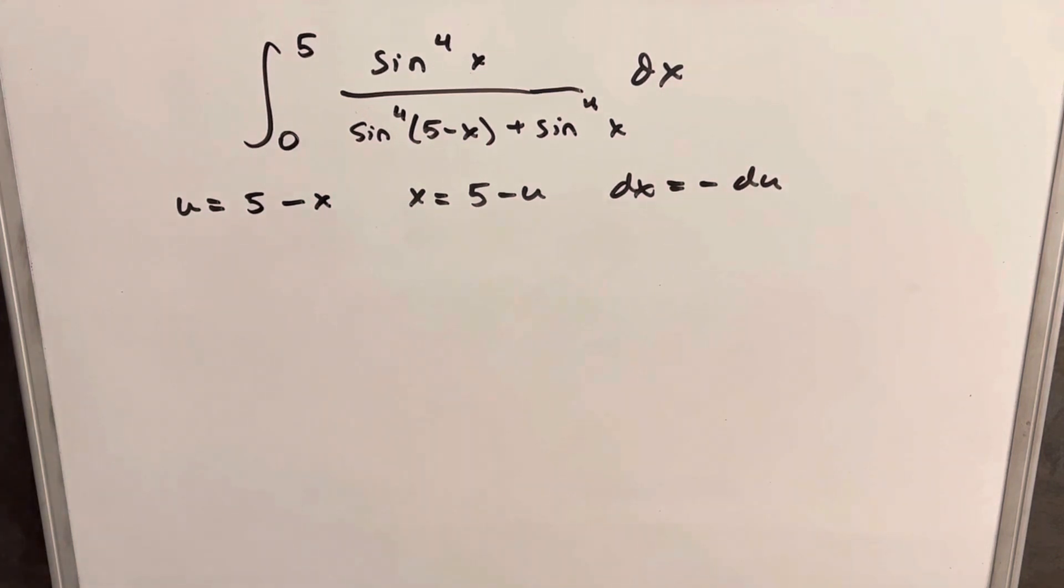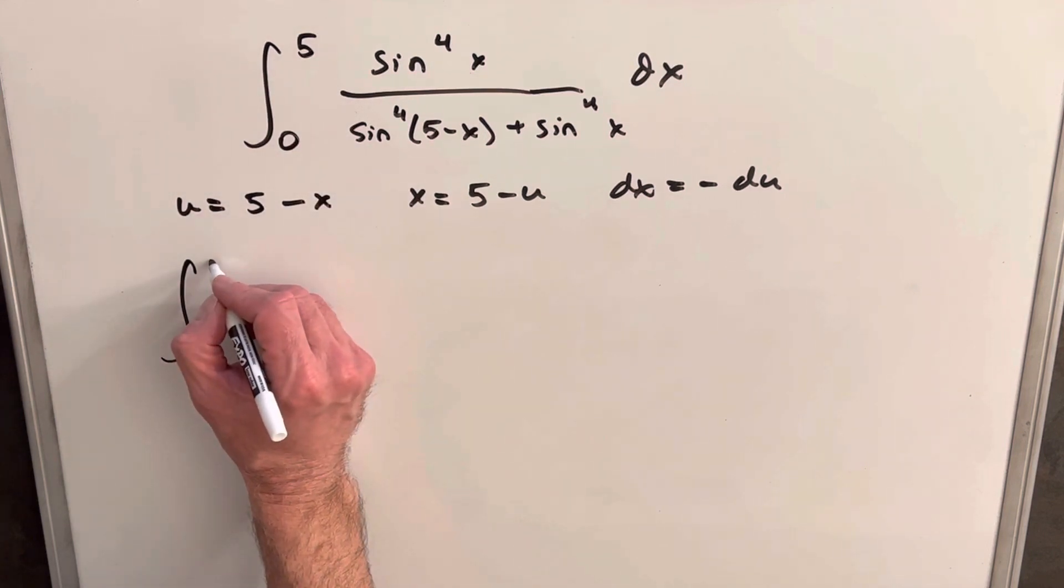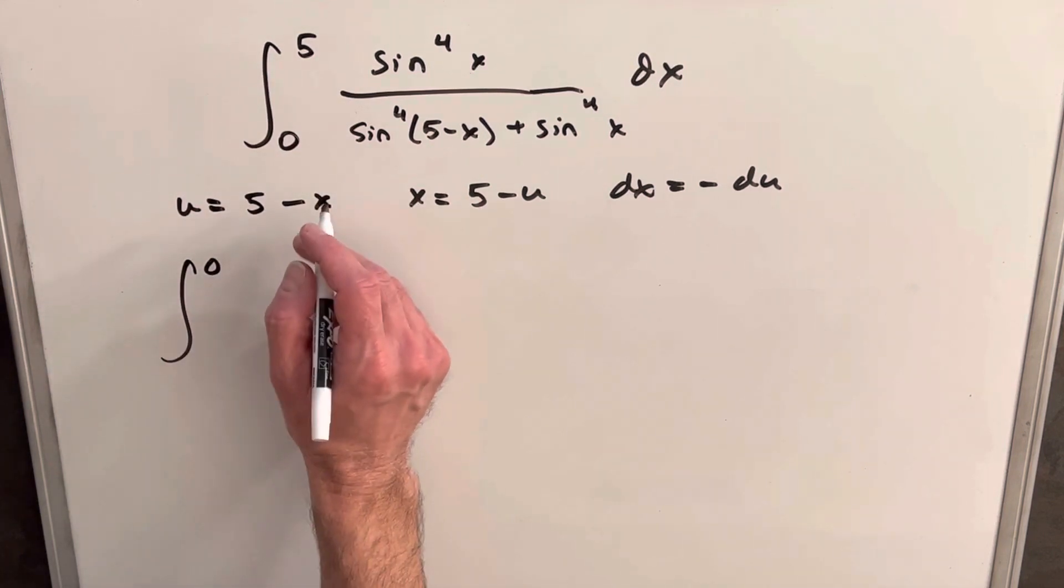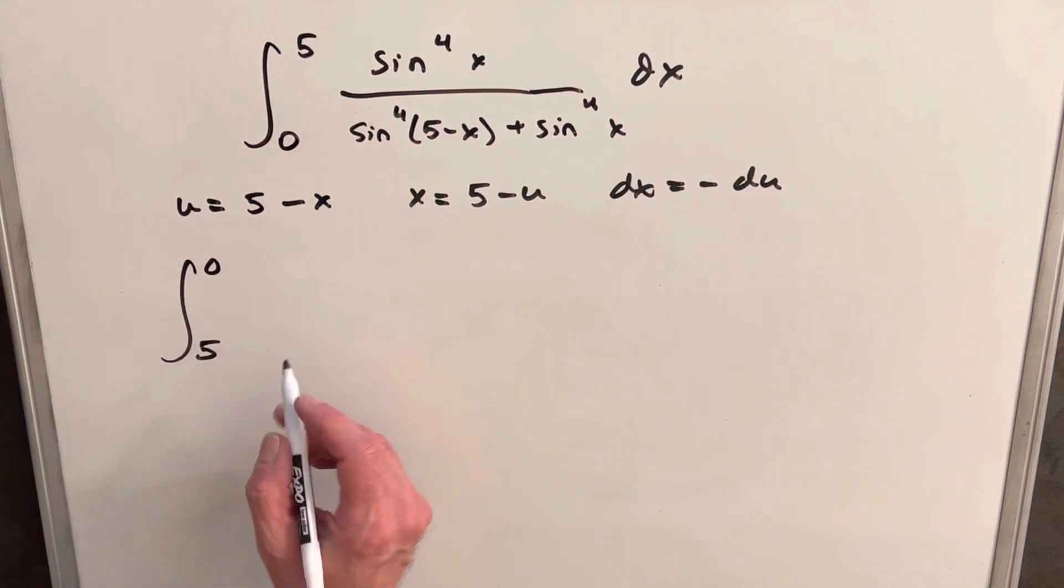Okay, so let's make the substitution and see what happens. So first we'll plug in our bounds, so we plug 5 in here, we get a 0. And we plug a 0 in, we get a 5. And that's one thing that always happens in these problems, is the bounds get flipped like that.